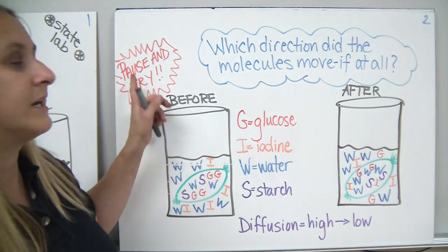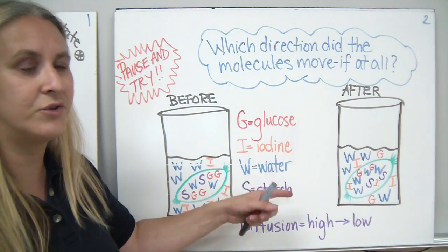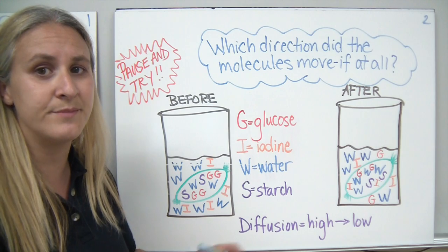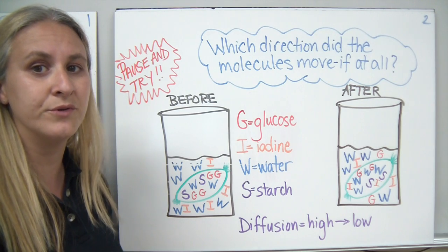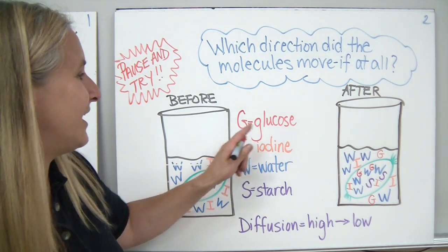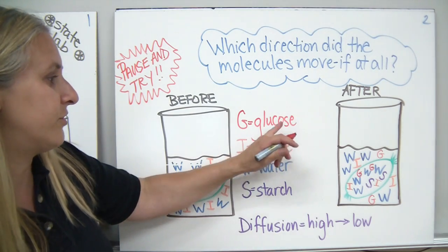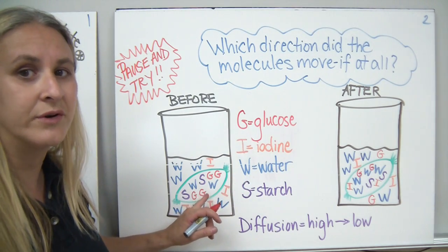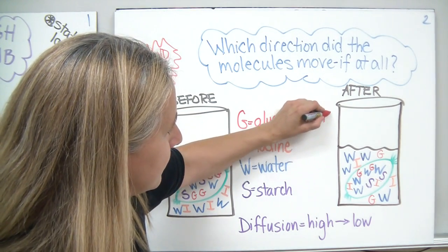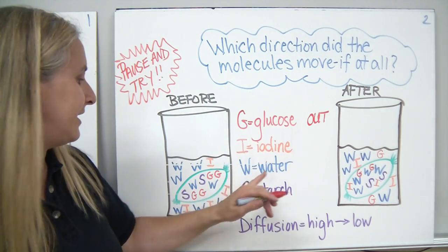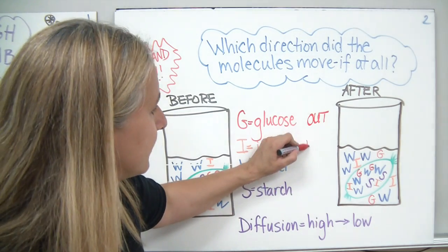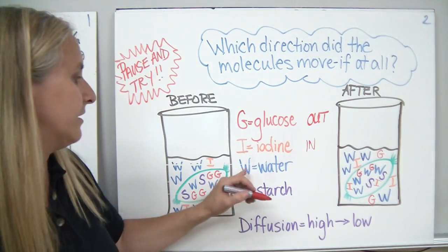Pause and try to label which direction each of these molecules moved based on diffusion. The glucose started in the bag and diffused out. The iodine started out in the solution and diffused into the bag.